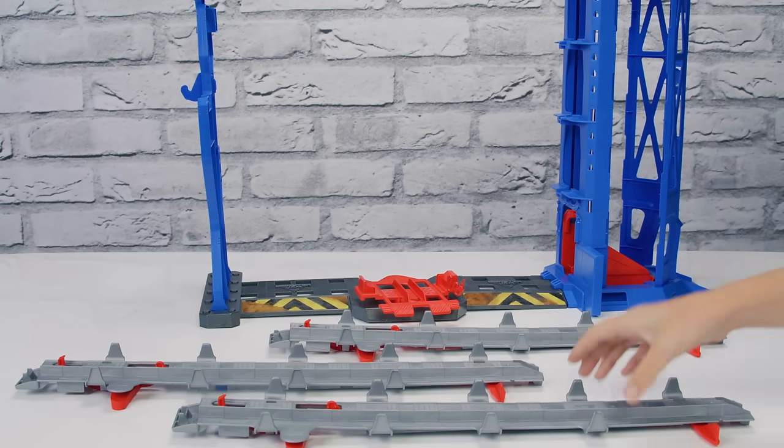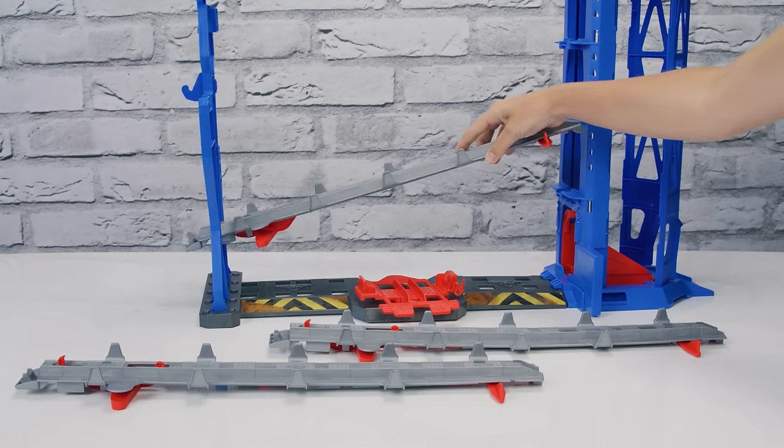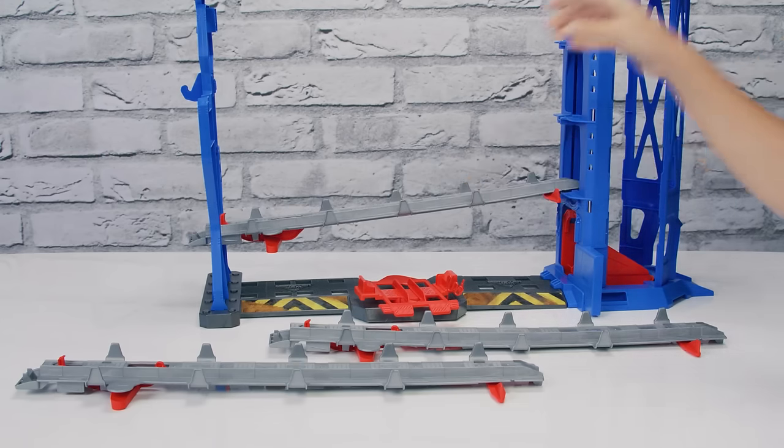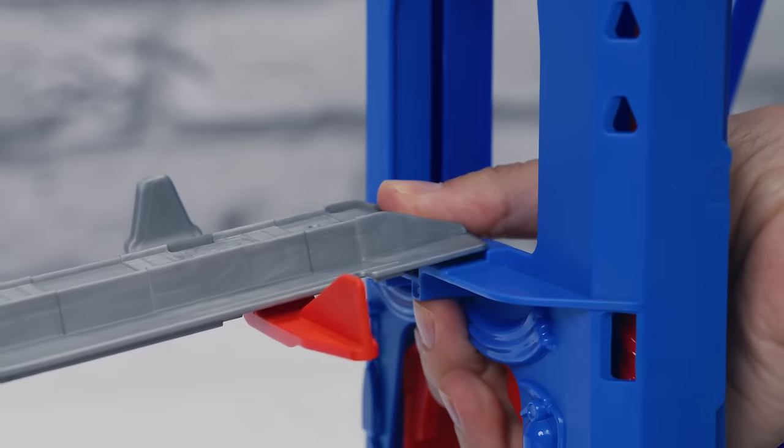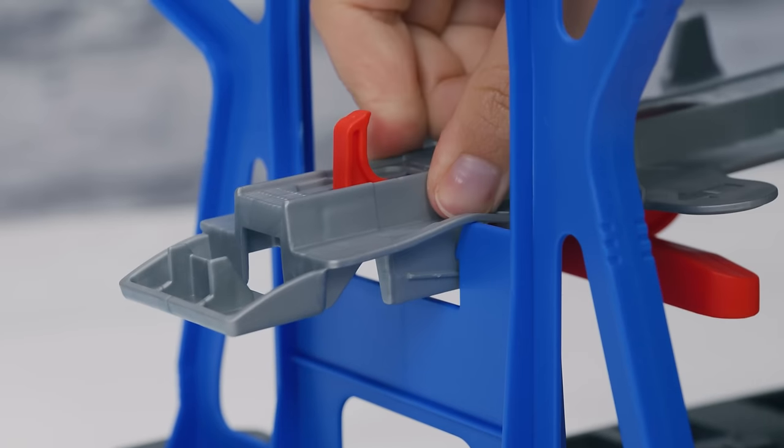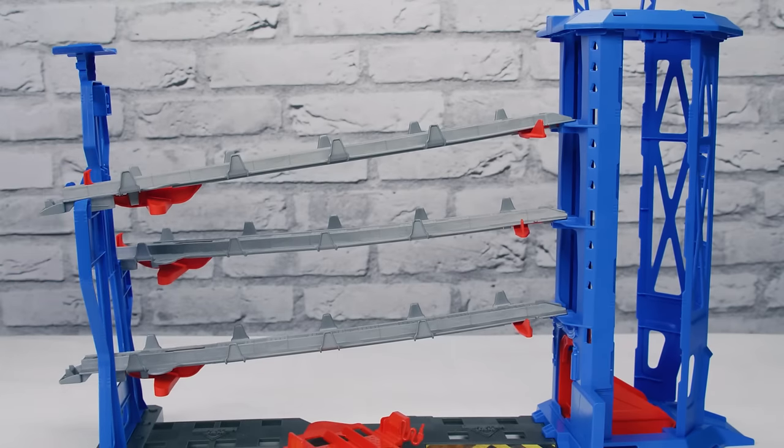Next, add the three tracks to the garage. Start at the lowest level and work your way up. Line up the connector points and attach. Follow the same steps for each level.